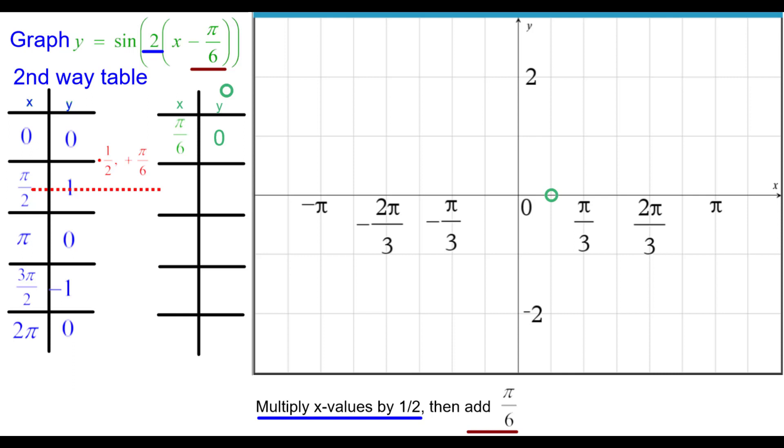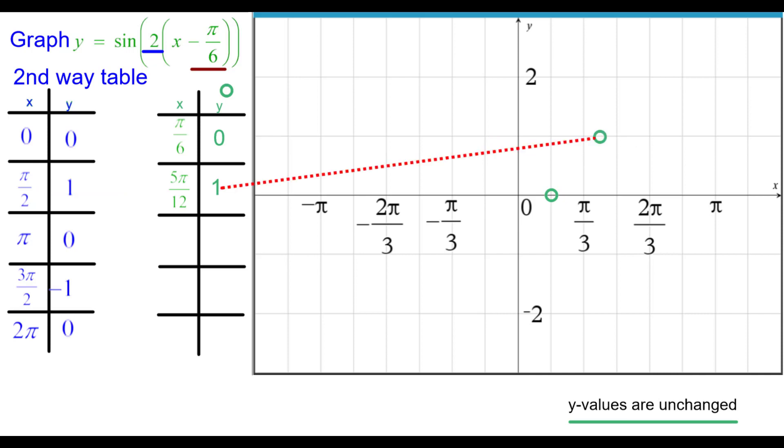Pi over 2 times 1 half plus pi over 6. These are the calculations. We need to get a common denominator. Turns out that that's 5 pi over 12. The y coordinates remains unchanged again. So write 5 pi over 12 up 1.